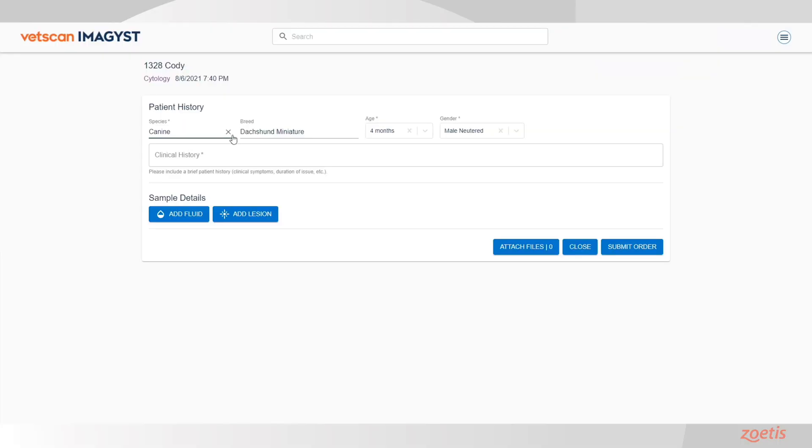Next, enter information for the patient's breed, age, and gender. The patient's species is already set. Include a brief clinical history.